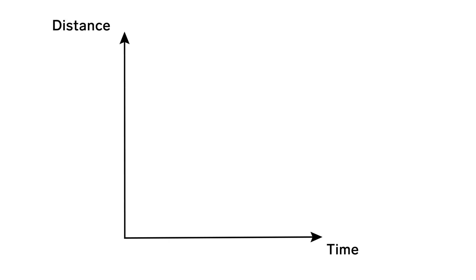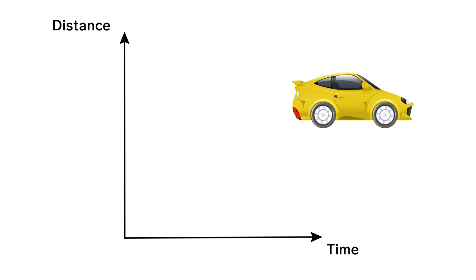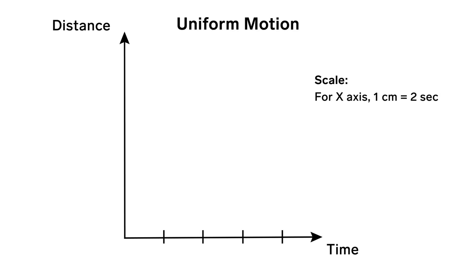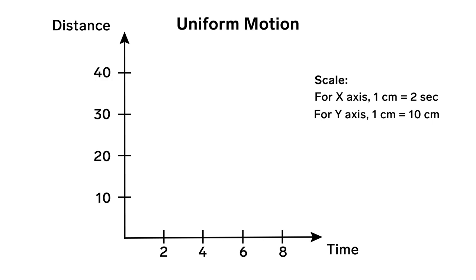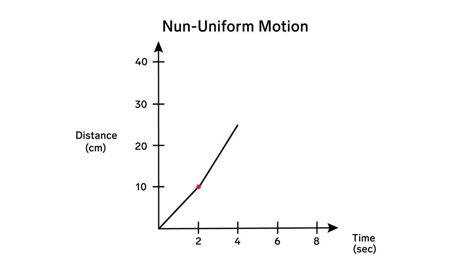The x-axis represents time and the y-axis represents the position or distance covered by the car. The scale used was 1 centimeter equal to 2 seconds on the x-axis and 1 centimeter equal to 10 centimeters on the y-axis. When we plotted the graph, we got a straight line representing uniform motion. The graph for non-uniform motion is not a straight line.